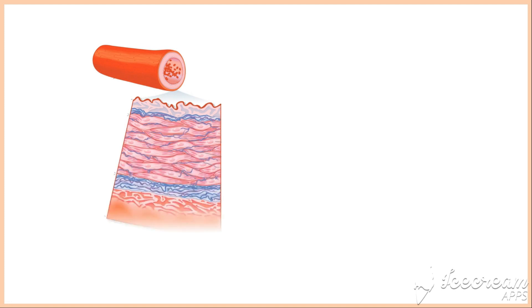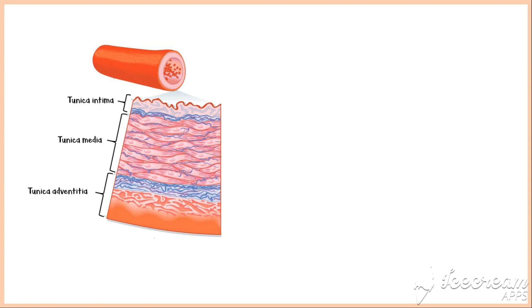If we recall the structure of a blood vessel, it consists of three main layers: tunica intima, which is the innermost layer; tunica media, which is the middle layer; and tunica adventitia, which is the outermost layer. Tunica intima consists of the endothelium, connective tissue, and internal elastic lamina.